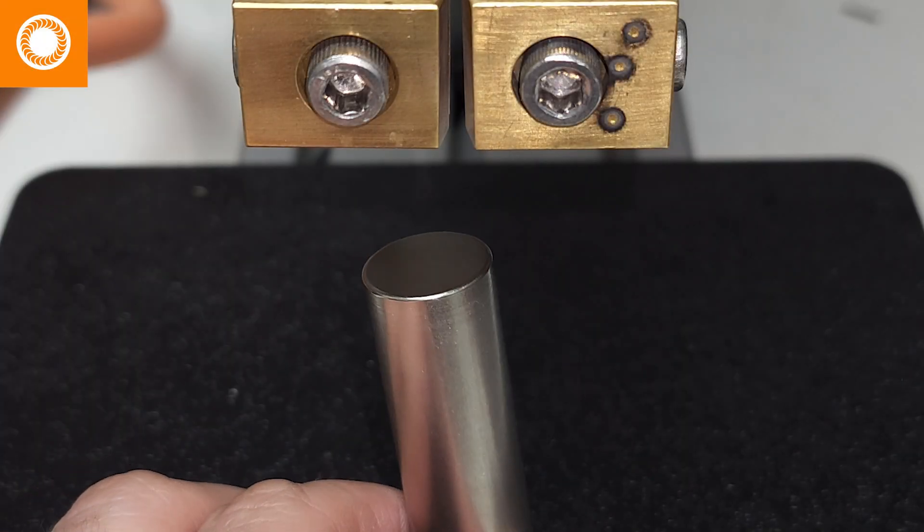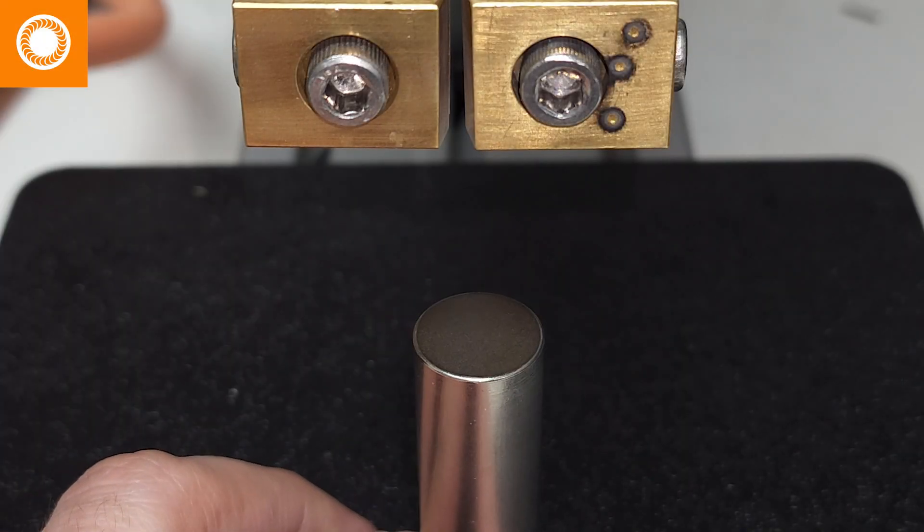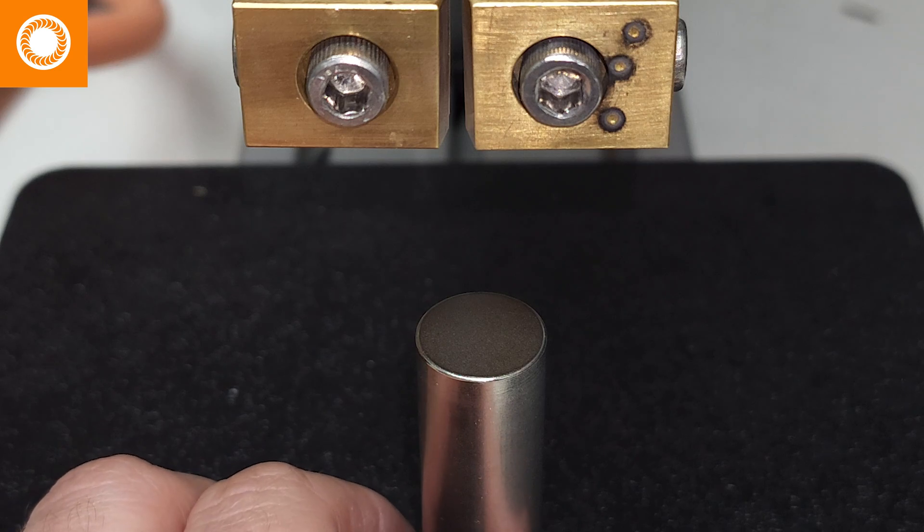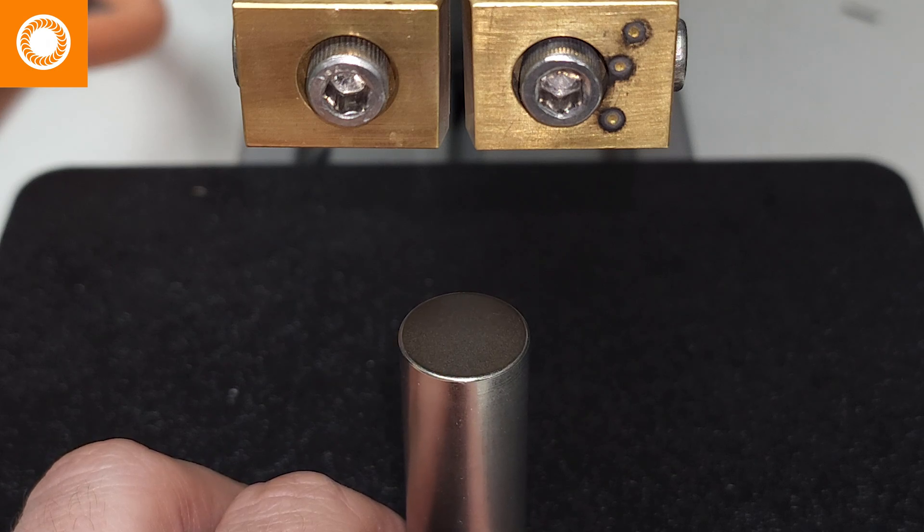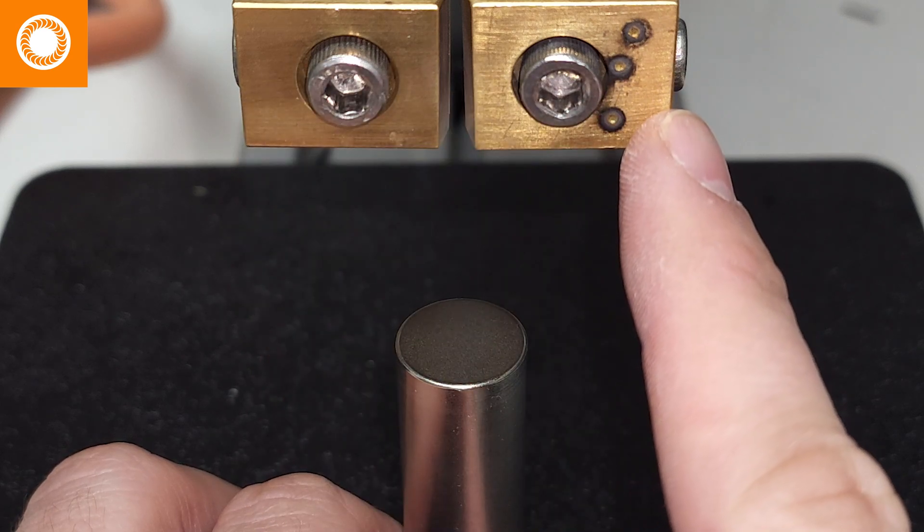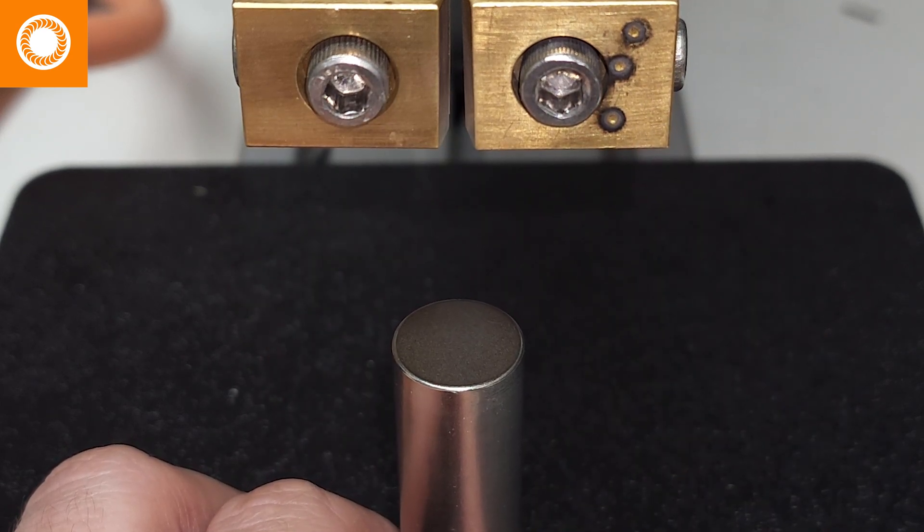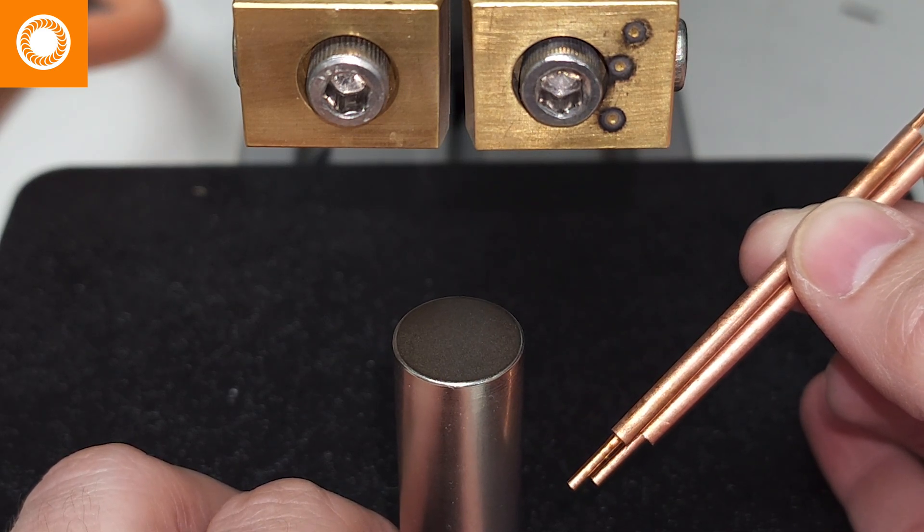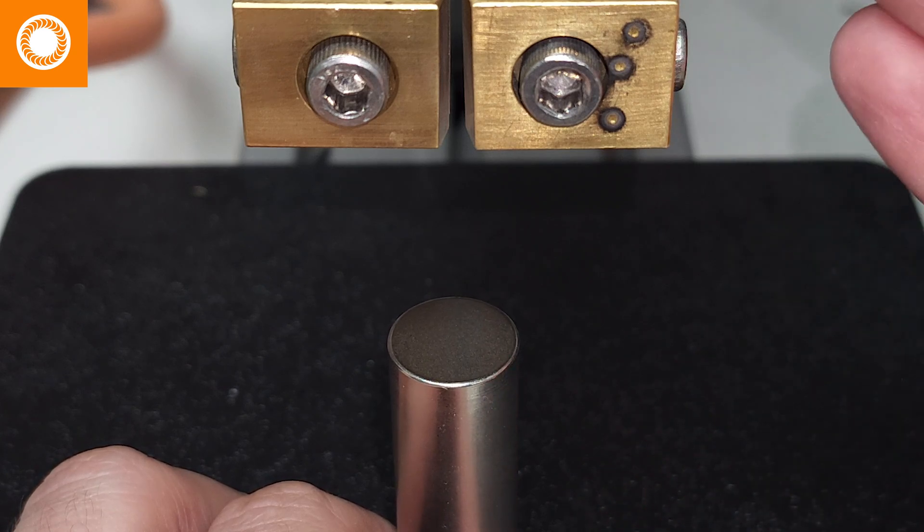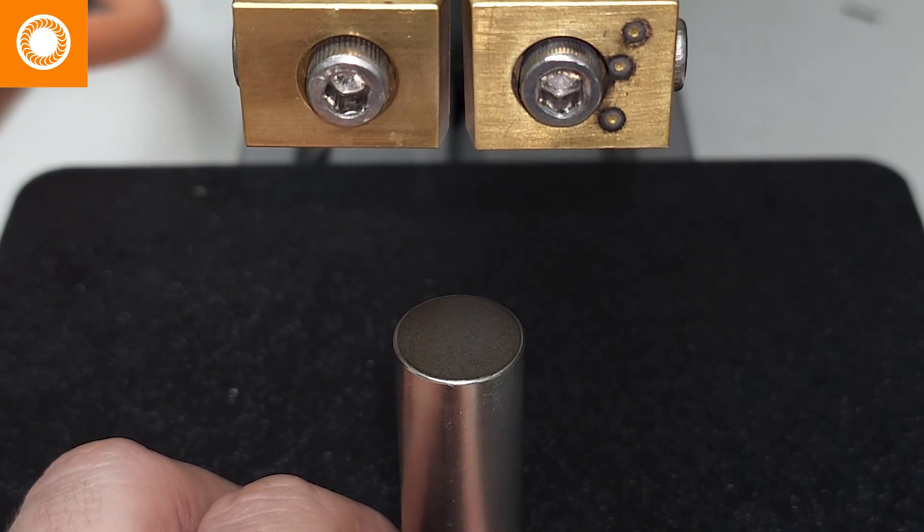This tutorial is going to cover how to weld batteries specifically with a capacitive discharge welder and a WH2125A. Two standing for two electrode holders descending at a time, 125 for the diameter of the electrodes, and A standing for automated or pneumatically driven in this case.